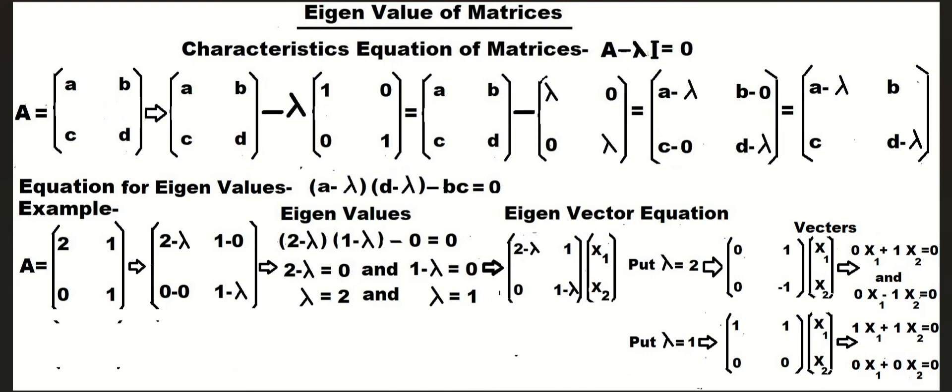For eigenvalue lambda equal to 2, we will find the eigenvector equations: 0x1 plus 1x2 equal to 0, and 0x1 minus 1x2 equal to 0.